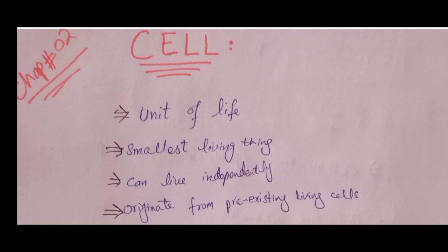Let's start our today's topic: the cell. The cell is basically the smallest living thing and the smallest unit of life. Every living thing is composed of cells. Cells can survive, live, and exist independently, and they originate from existing cells. There are two types of cells: eukaryotic and prokaryotic.